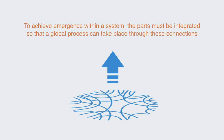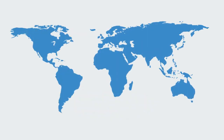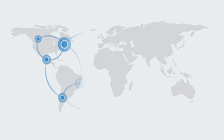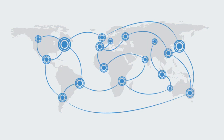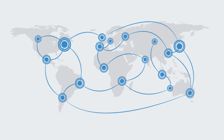To achieve emergence within a system, the parts must be integrated so that a global process can take place through those connections. As another example, through globalization — which is the process of international integration — we are witnessing the rise of global processes such as production and logistics processes that require the integration of economies and organizations across the entire planet.